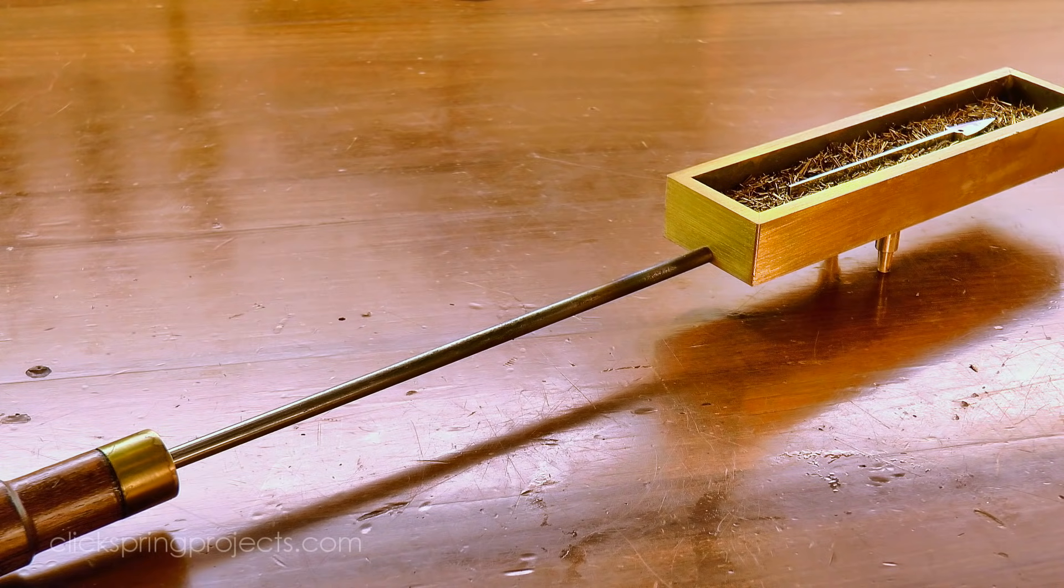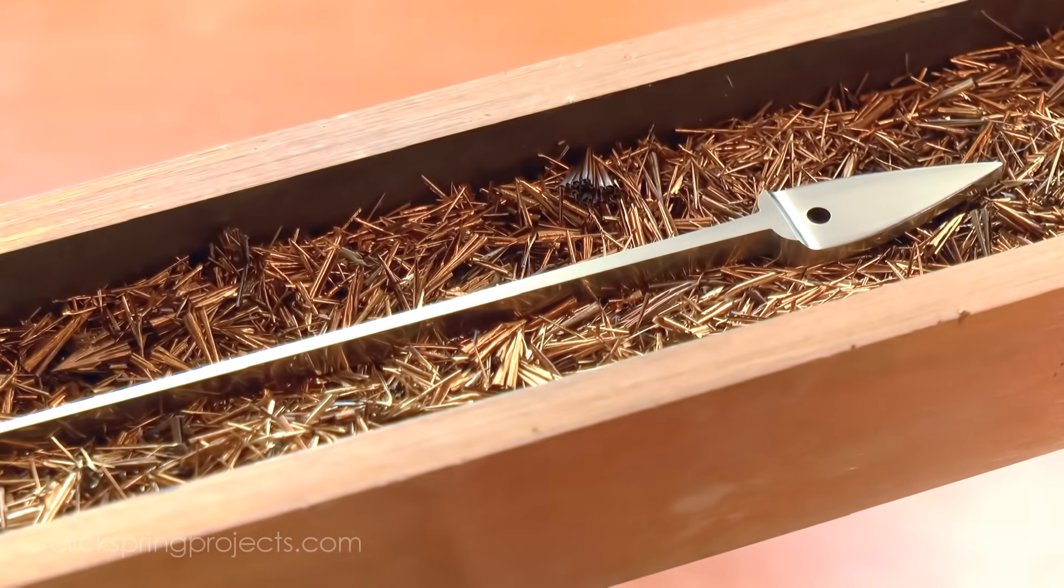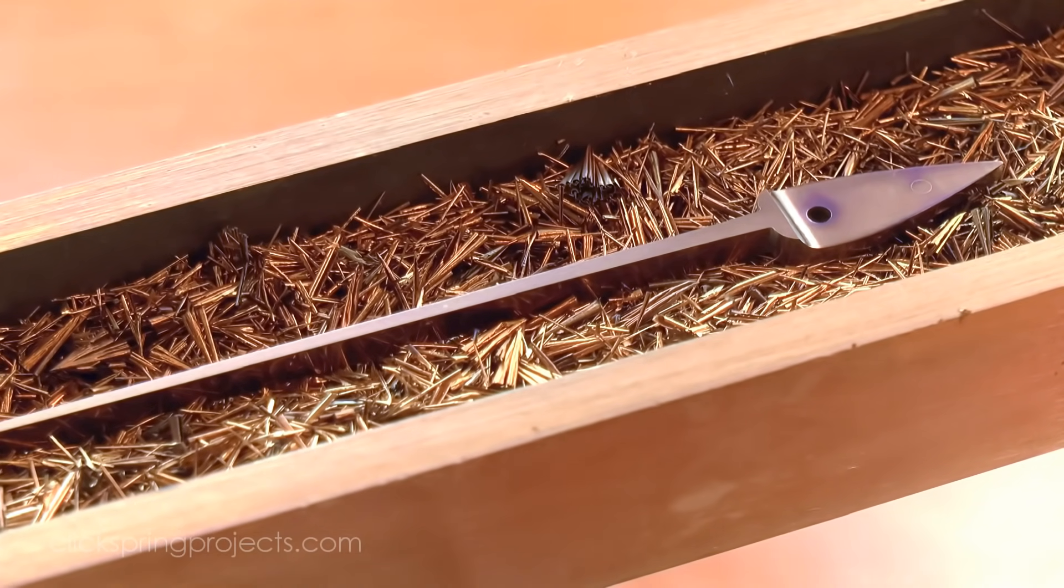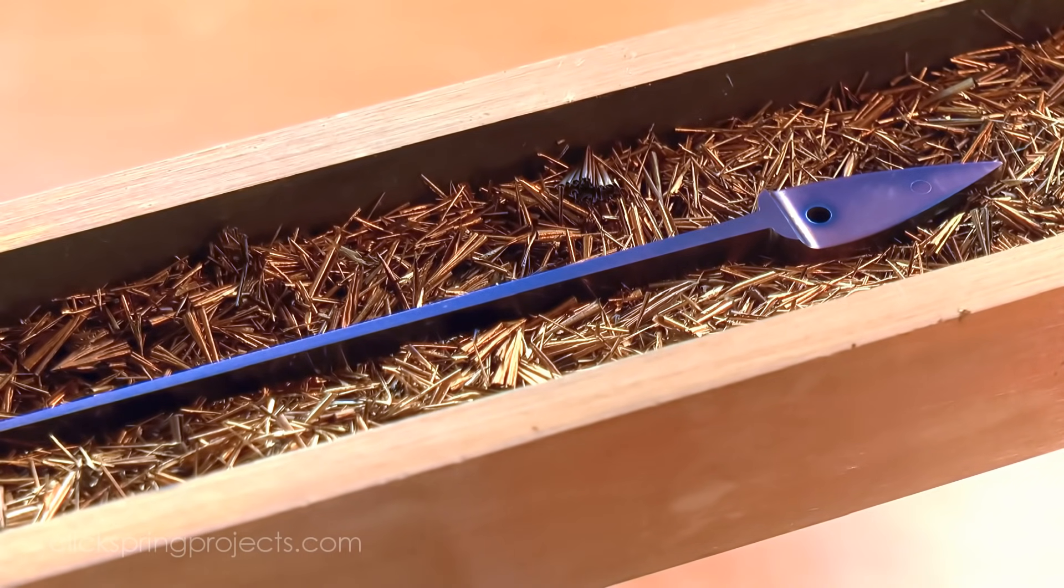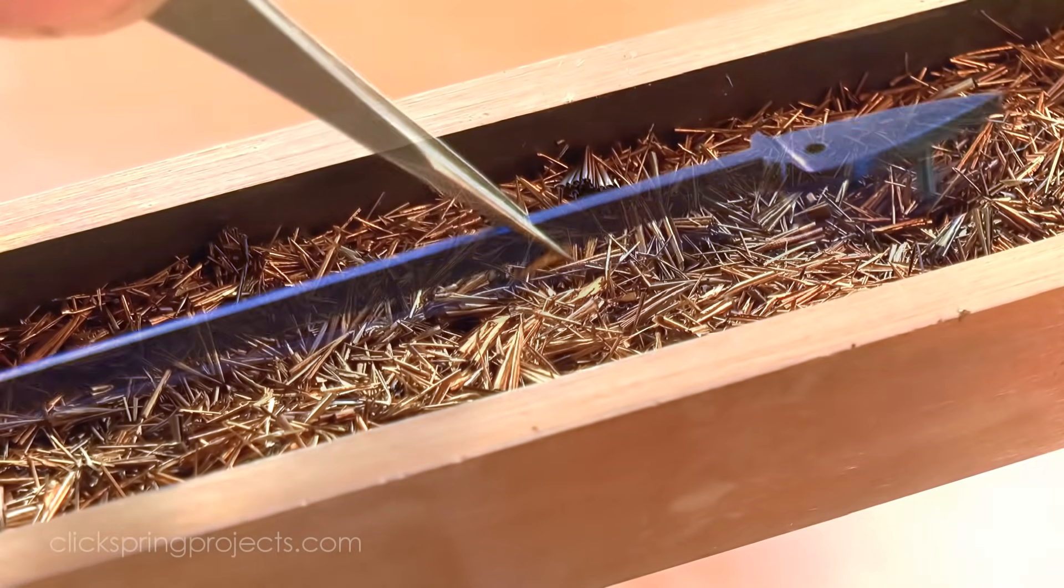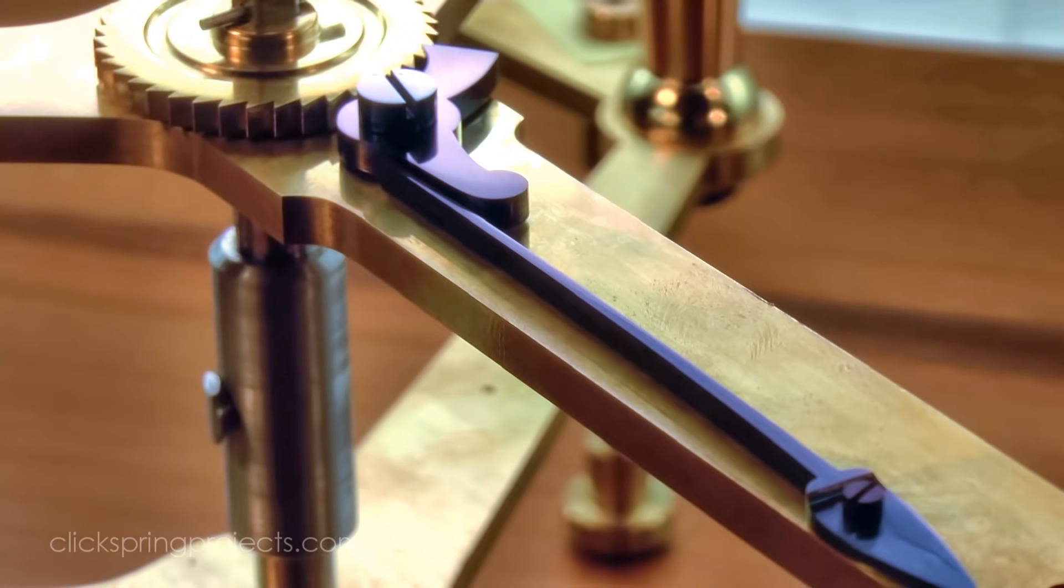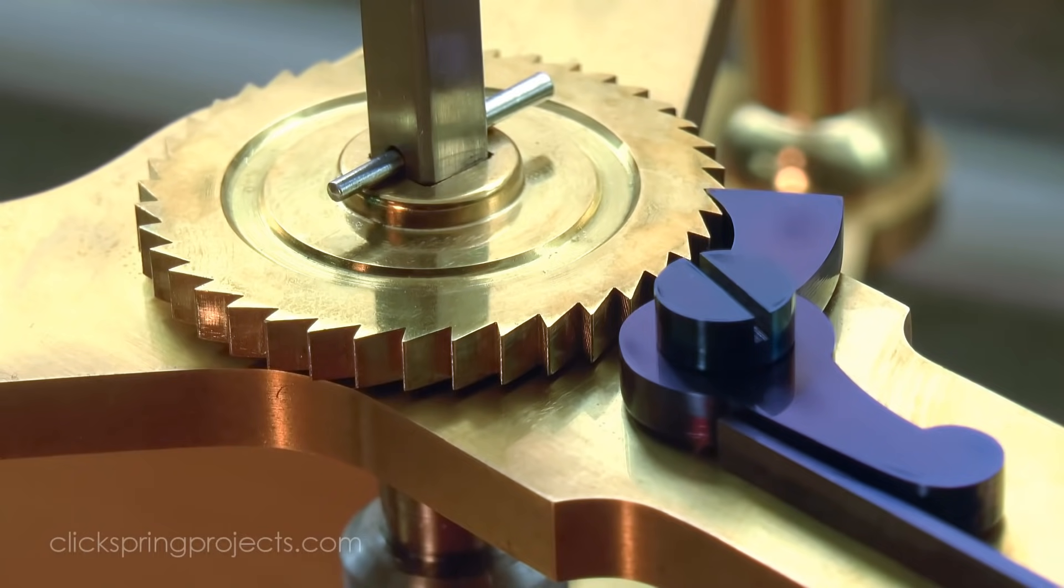Now the click spring is the first of several quite long thin parts that need to be blued on this clock. So I made a new addition to the bluing tray set to accommodate it. Click on the link if you'd like to know more. All of the parts were then fitted to the clock frame for final testing.